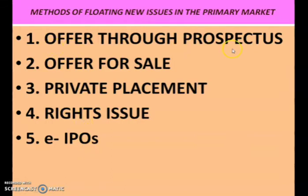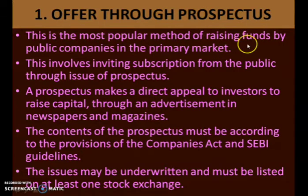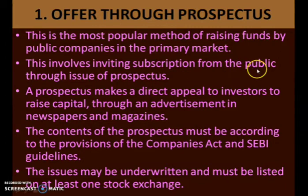The five methods are: first, offer through prospectus; second, offer for sale; third, private placement; fourth, right issue; and fifth, EIPOs. The first method is offer through prospectus. This is the most popular method of raising funds by public companies in the primary market. It involves inviting subscription from the public through issue of a prospectus. The company issues a prospectus and invites the subscription of the public.